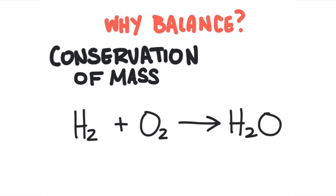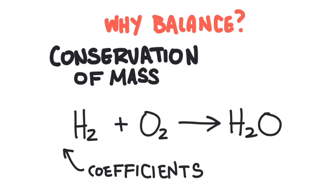When we balance a chemical equation, we are going to be changing the numbers out in front of the chemical species — these are called coefficients. If there is no coefficient, we assume there's a one there, we just don't write it. We will be changing coefficients so that the total number of atoms on the left equals the total number of atoms on the right.